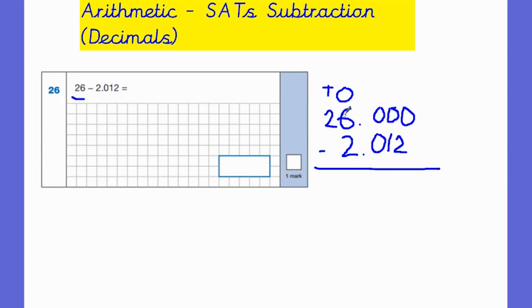We can borrow from the 6 because it's larger than 2. So I'm going to take from the 6. That becomes 5. That becomes 10. But I'm going to cross that out and make it 9. That becomes 10. But I'm going to cross that out and make that 9 because I'm borrowing again. And finally that becomes 10. 10 take away 2 is 8. 9 take away 1 is 8. 9 take away 0 is going to be 9. And then we've got 5 take away 2 is 3. And 2 take away 0 is 2. Remembering once again the decimal points must line up. So decimal point, decimal point is going to go here. Leaving us with a final answer of 23.988.